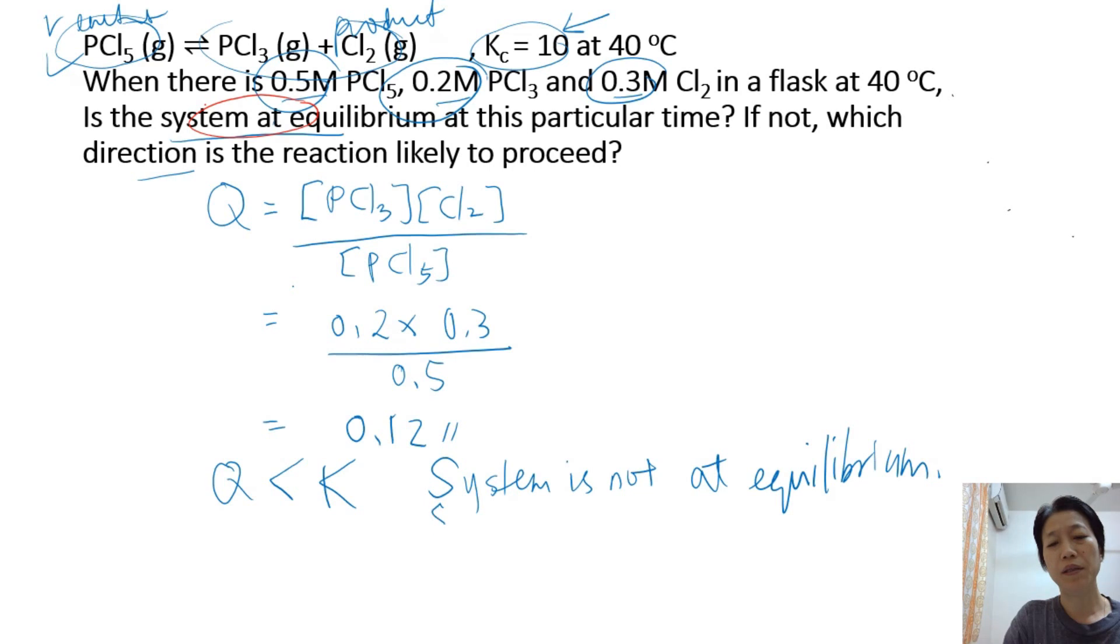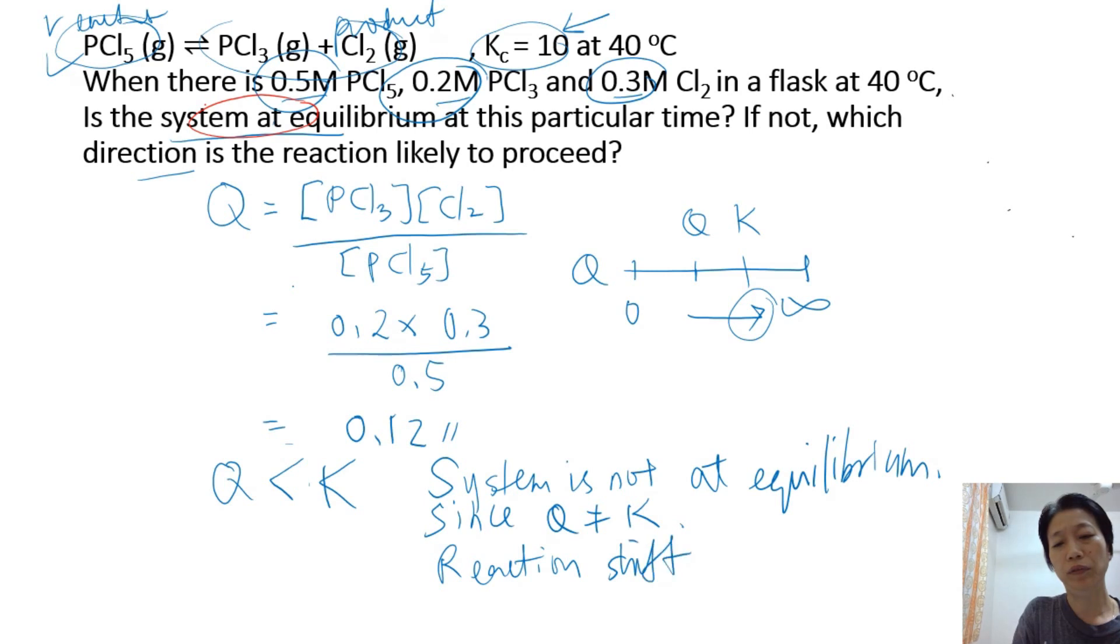Because Q is smaller than K, remember Q can have a value from 0 to infinity. Here Q is smaller than K. In order to become K, the net direction has to shift to the right. So the reaction will shift to the right. Remember the mouth of a shark is also telling us the reaction will shift to the right.